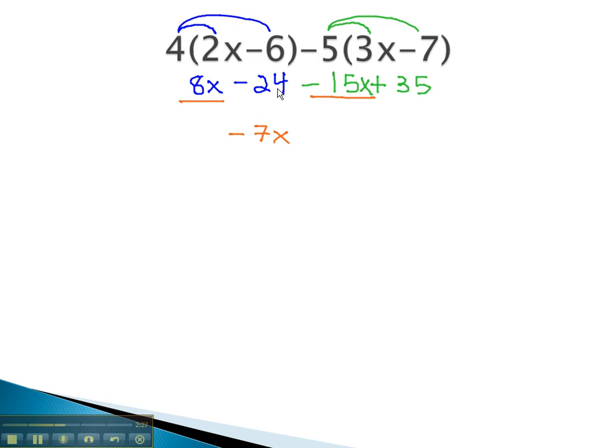The other like term that we have is the negative 24 and the positive 35. By not having any variables at all means they are in common with no variables. They are like terms. The positive is bigger, and when we do 35 minus 24, we end up with 11.